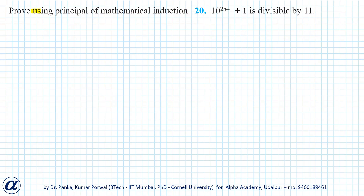In this question, using the principle of mathematical induction, we need to show that 10 to the power 2n minus 1 plus 1 is divisible by 11.